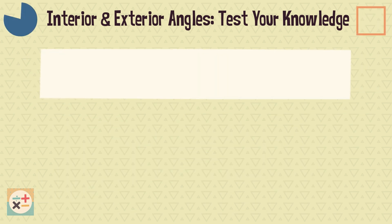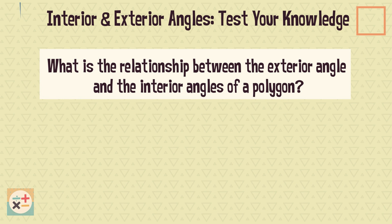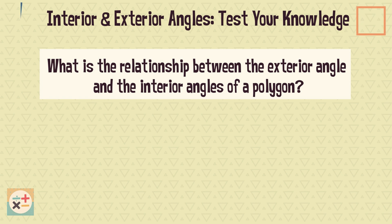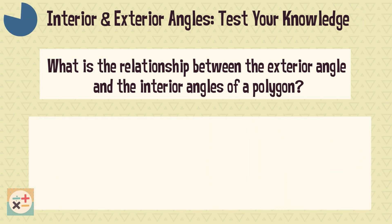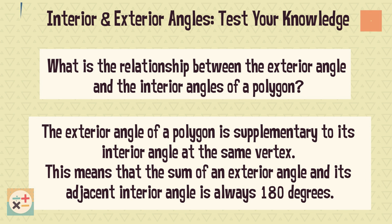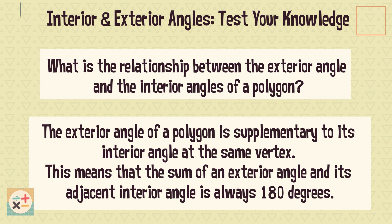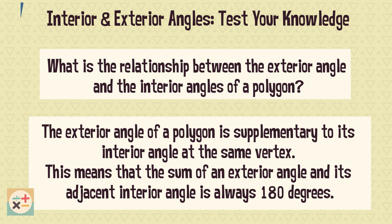Question 5. What is the relationship between the exterior angle and the interior angles of a polygon? The exterior angle of a polygon is supplementary to its interior angle at the same vertex. This means that the sum of an exterior angle and its adjacent interior angle is always 180 degrees.